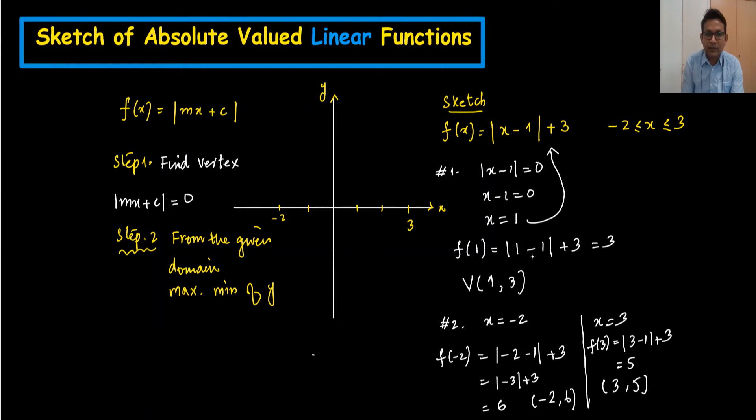And the y is 3, 6, and 5. And maximum value of y, I'm just writing only 6. Now what we can do here. If you want, you can write 1, 2, 3, 4, 5, and 6. Little bit up. Now sketch is very simple. Where is the vertex?